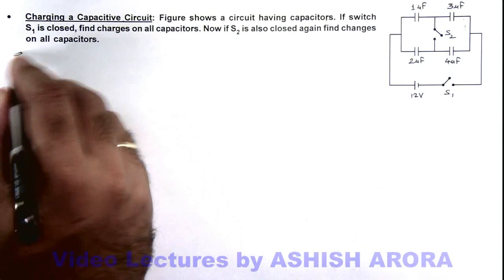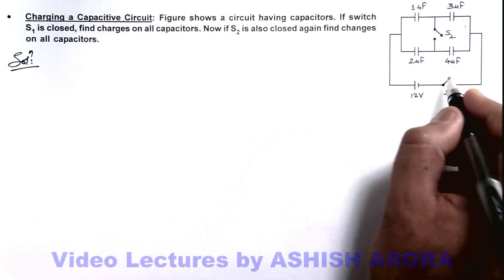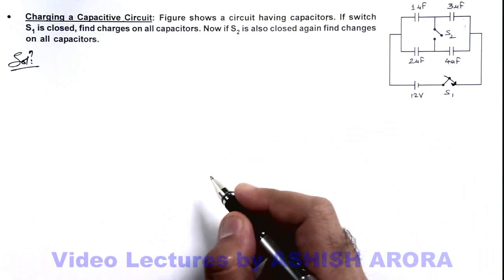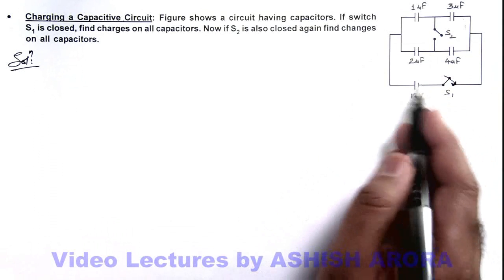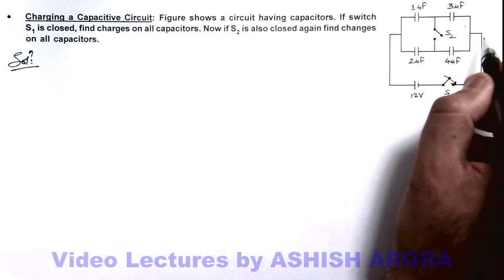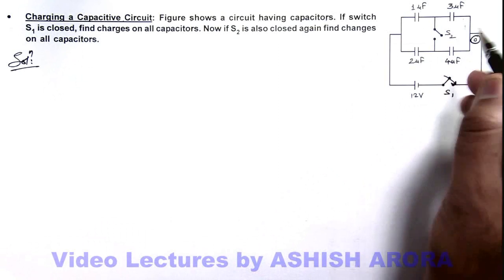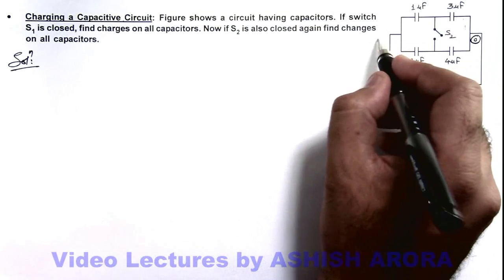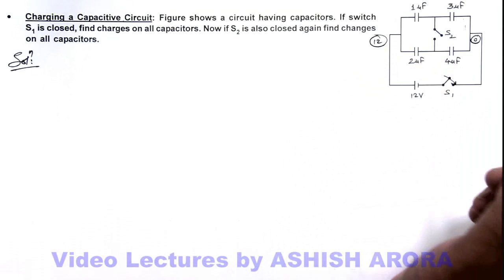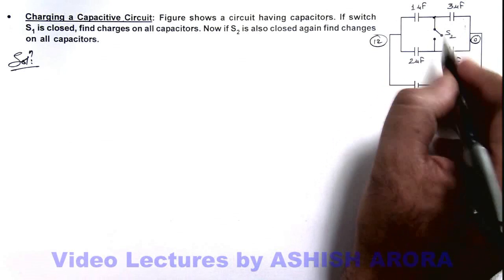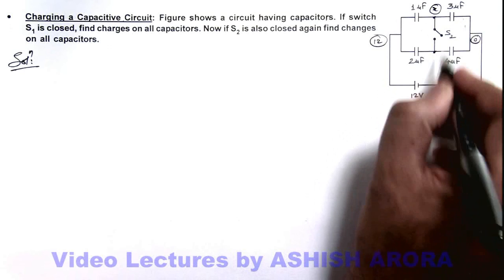In the initial state, when S2 is open and switch S1 is closed, we can distribute the potential in the circuit due to this 12 volt battery. We can take the right hand side as zero potential reference, then on the left hand side due to this battery the potential is 12 volts. At these two nodes we can consider potential to be x and y.